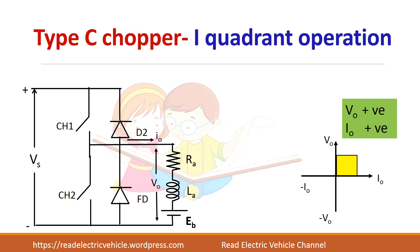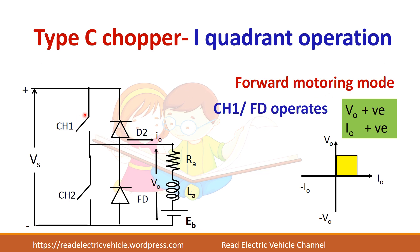Let us see about the first quadrant operation of type C chopper. In the first quadrant, both voltage and current are positive, and we can achieve forward motoring mode. The circuit consists of two switches with anti-parallel diodes — essentially a single leg of an inverter. The DC motor is connected in between, represented by R, L, and E. The top point is positive and current entering the load is assumed to be positive.